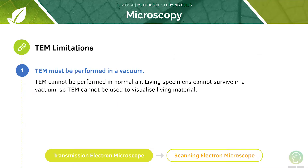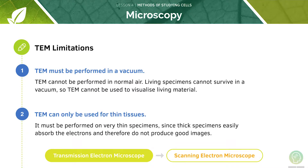However, there are some limitations of TEM. TEM cannot be performed in normal air and must be performed in a vacuum. Living specimens cannot survive in a vacuum, so TEM cannot be used to visualise living material. Also, TEM can only be used for thin tissues, as thick specimens would easily absorb the electrons and therefore would not produce good images.